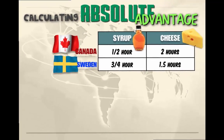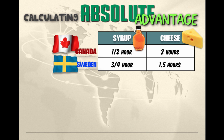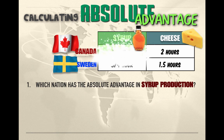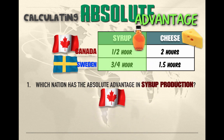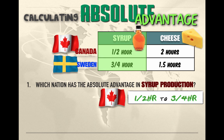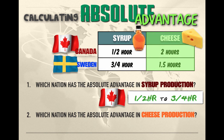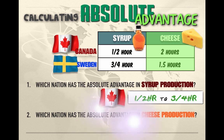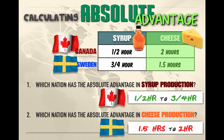Now let's look at absolute advantage from the input standpoint. Canada and Sweden can produce two goods: syrup and cheese. When dealing with inputs, the country with the absolute advantage is the one that can produce one unit of a good using fewer labor hours — in other words, they can do it faster. If Canada can produce one unit of syrup in half an hour and Sweden needs three-fourths of an hour, Canada has the absolute advantage in syrup production. In cheese production, Canada takes two hours while Sweden takes one and a half hours, so Sweden has the absolute advantage in cheese.